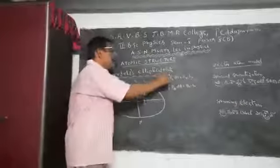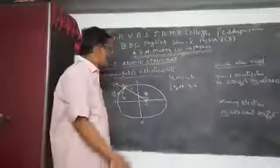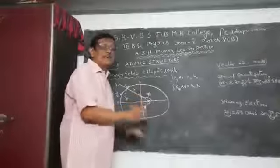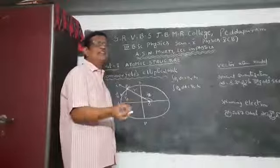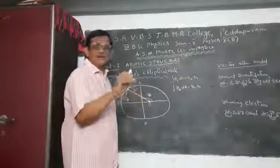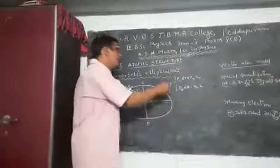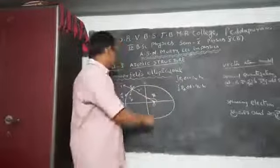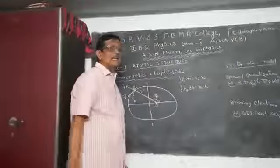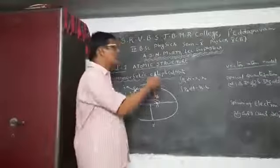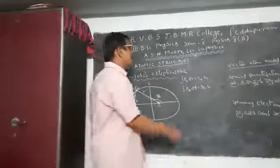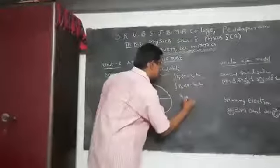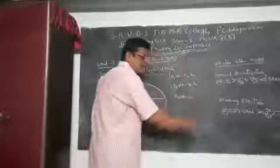Here P is the angular momentum. Because the electron is moving with some radial velocity, when there is velocity there is momentum — both radial momentum and angular momentum. Two quantum conditions exist, giving us n_r and K, and n_r plus K is equal to N.